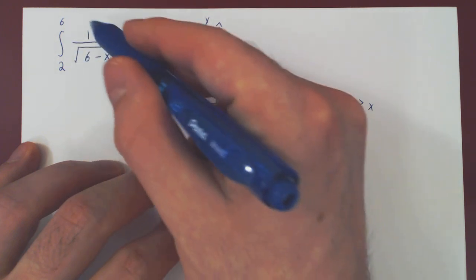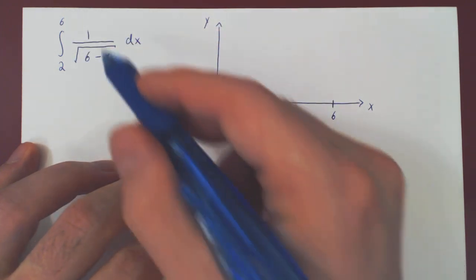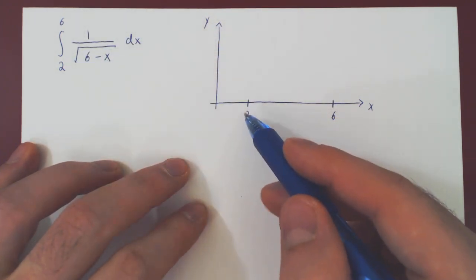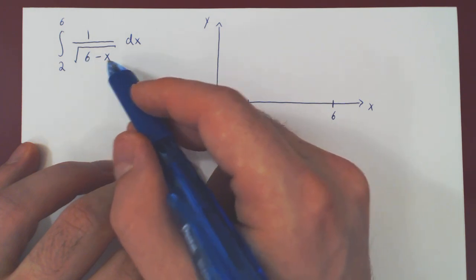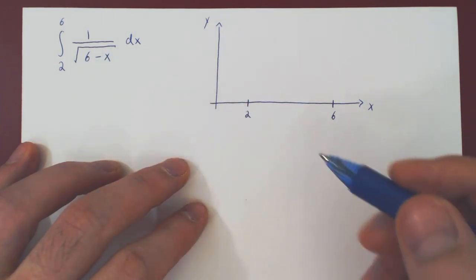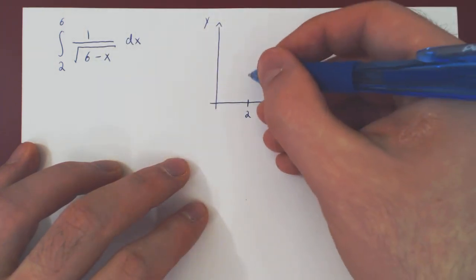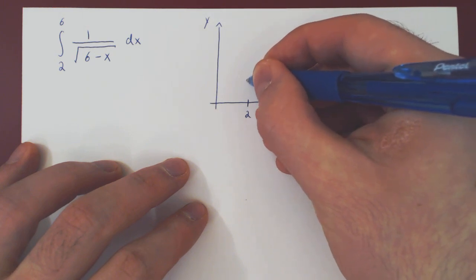So let's sketch the graph of our function. When x is 2, 6 minus 2 is 4, root of 4 is 2. And so the function is 1 over 2, so we have a y value of 1 half.